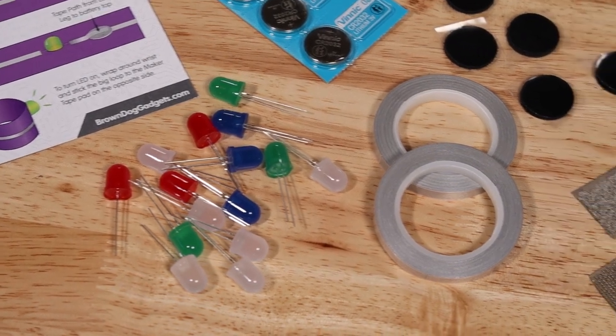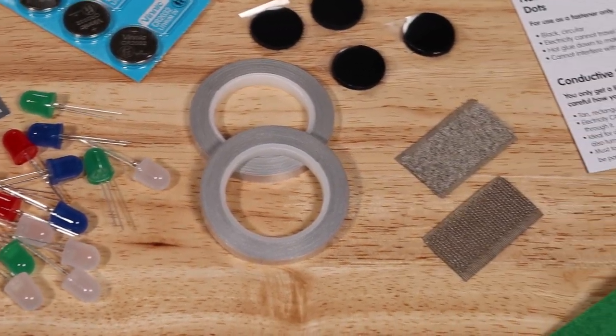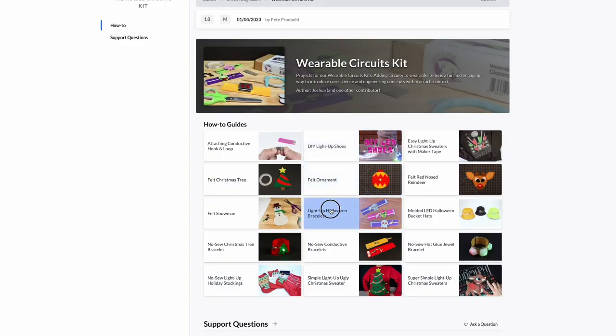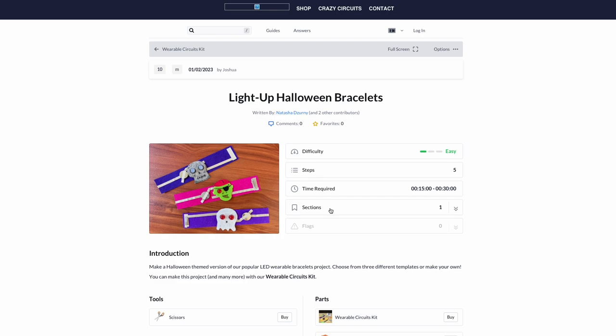The kit features jumbo LEDs, conductive maker tape, and conductive hook and loop fastener. You can follow one of our many online guides or add lights to your own project.